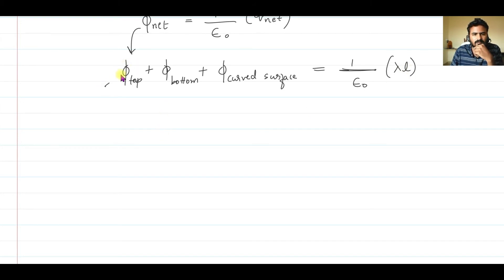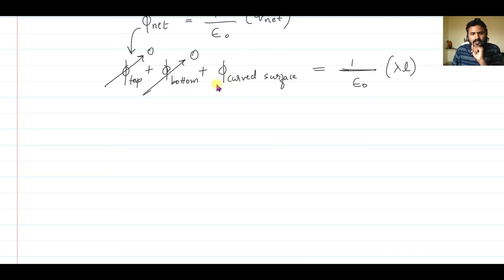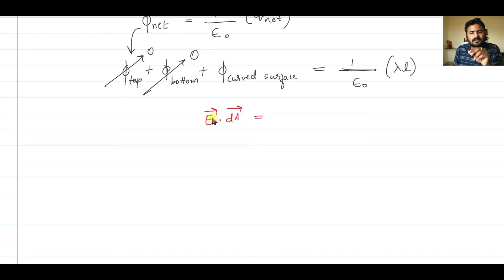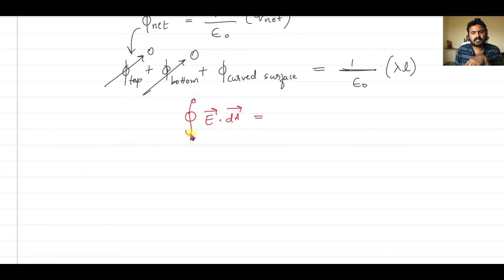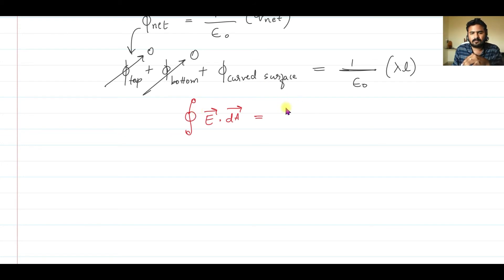The flux through the top and bottom surfaces is zero. We only need to find the flux through the curved surface. The flux through a small area dA is E⃗ · dA⃗. To get the total flux through the curved surface, we integrate: closed integral of E⃗ · dA⃗ throughout the curved surface area, and that equals (1/ε₀) × lambda × L.